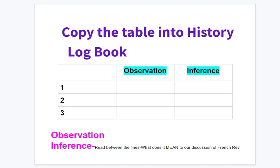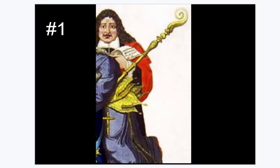Looking at the first slide, I want you to jot down just what you see — just your observations, just visually what catches your attention in slide one. Then take a look at slide two; see what catches your attention: objects, placement, clothing.